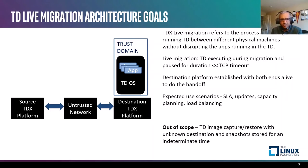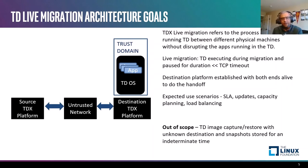Some things are explicitly out of scope for the live migration architecture, such as storing and capturing TD images where the destination platform for that snapshot restoration is unknown. Those sorts of use cases are out of scope of the live migration architecture.